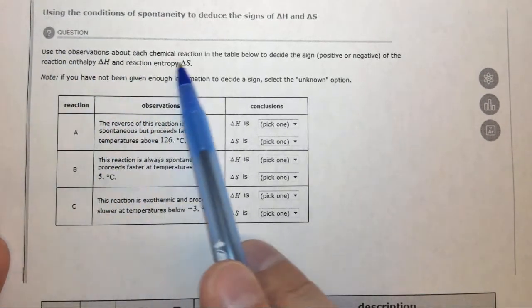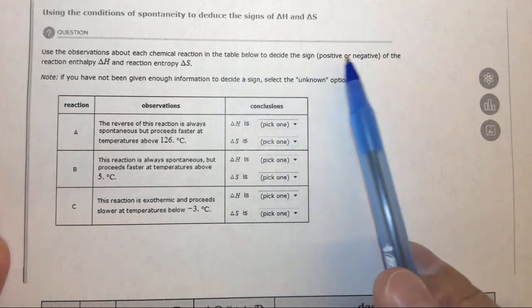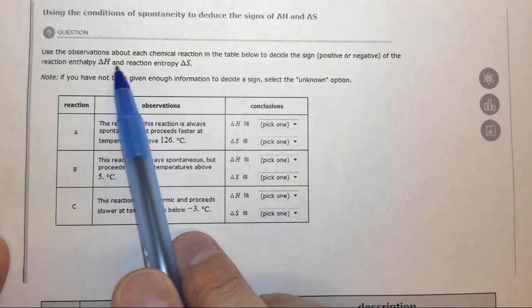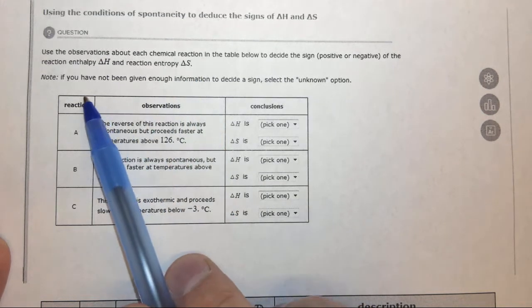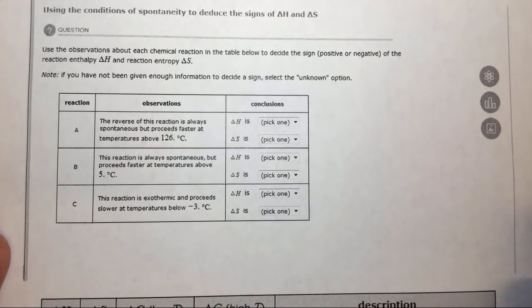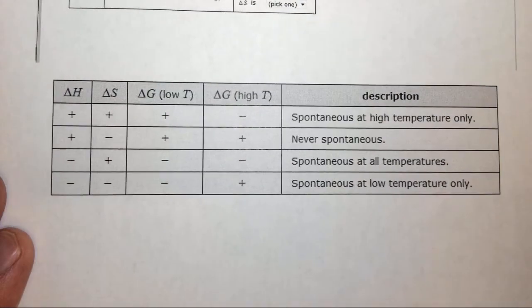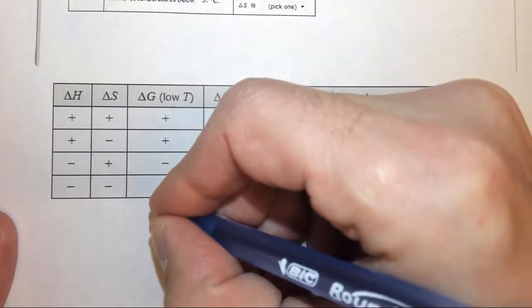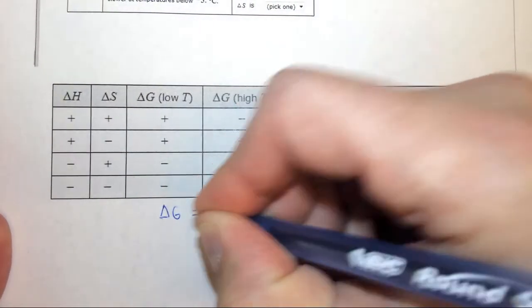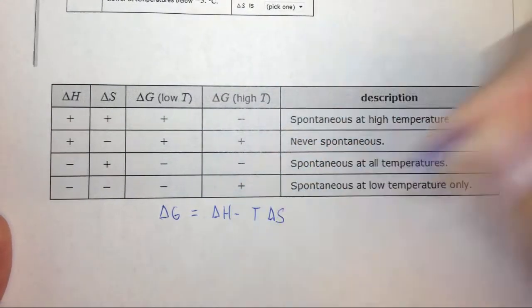This question says to use the observations about the chemical reaction in the table to decide the sign, positive or negative, of the reaction enthalpy and the reaction entropy. It says you may not always be given enough information, so you can put a note. To do this, I want to first look at this table and talk our way through it before we actually try to answer this question. Remember that delta G equals delta H minus T delta S.